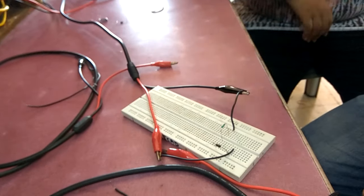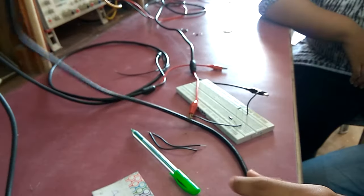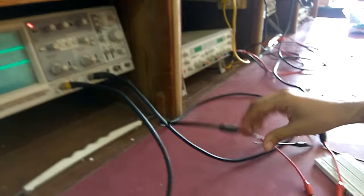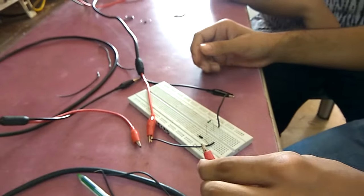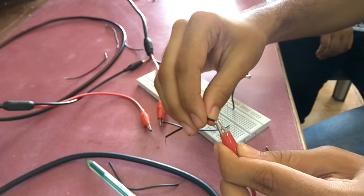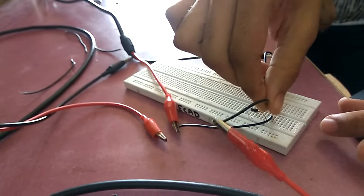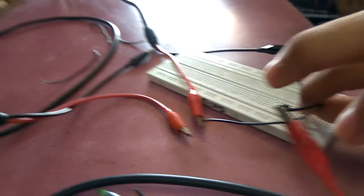Now next thing you need to do is connect it to CRO. Now I have these probes of CRO. This is channel A probe and this is channel B probe. Now this channel A probe I am connecting it to the input just to check the input. I have connected it to input.